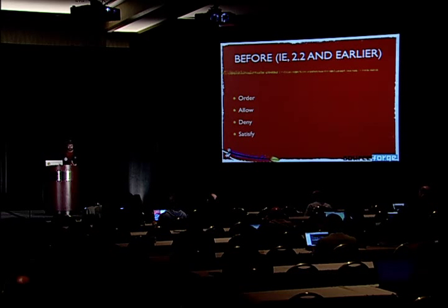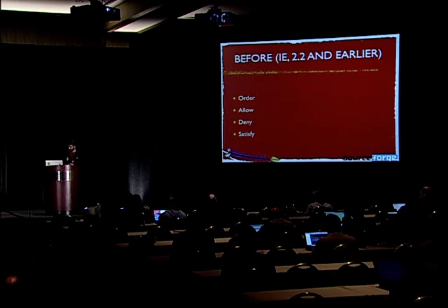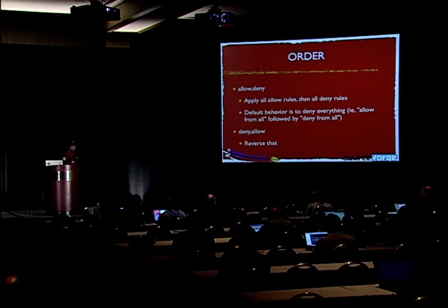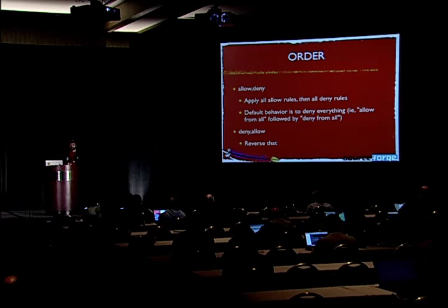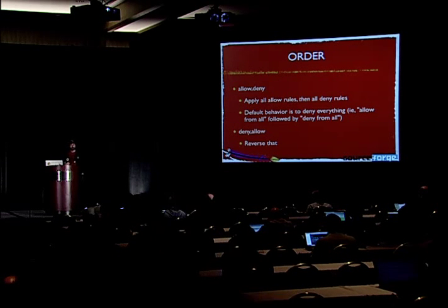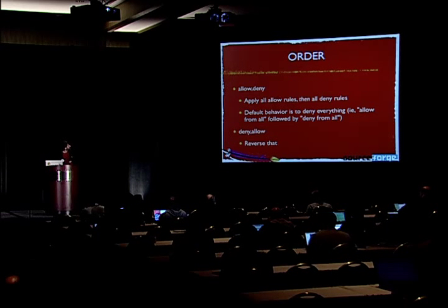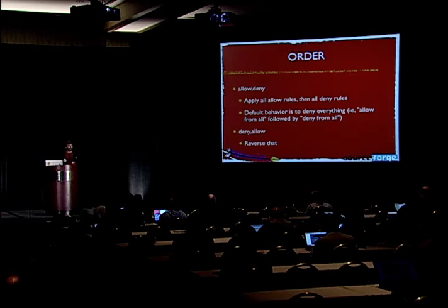In 2.2 and earlier, we had four main directives that specified access control: the order, allow, deny, and satisfy directives. The order directive — you can think of this in terms of how you might set up firewall rules. You can either deny everything and then allow selectively, or you can allow everything and then deny the bad stuff. In the order directive, 'allow, deny' specifies that you apply all of the allow rules and then go back and apply all the deny rules. This becomes confusing when you are merging multiple sections of your configuration with overlapping directory blocks.